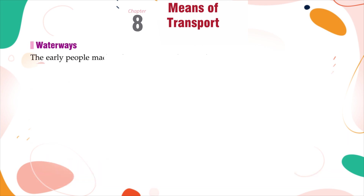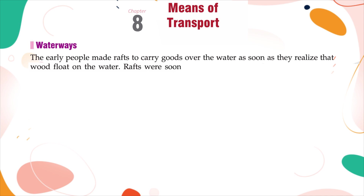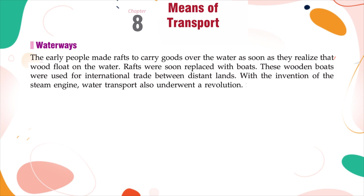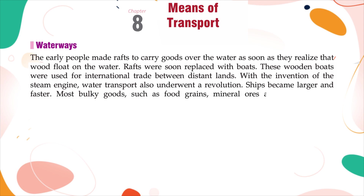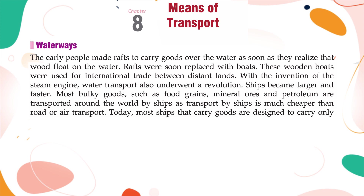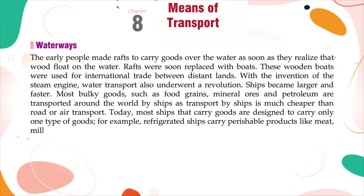Waterways: The early people made rafts to carry goods over water as soon as they realized that wood floated on water. Rafts were soon replaced with boats. These wooden boats were used for international trade between distant lands. With the invention of the steam engine, water transport also underwent a revolution. Ships became larger and faster. Most bulky goods such as food grains, mineral ores, and petroleum are transported around the world by ships, as transport by ships is much cheaper than road or air transport. Most ships that carry goods are designed to carry only one type of goods. For example, refrigerated ships carry perishable products like meat, milk, fruits, and flowers, while tankers are used for carrying oil.